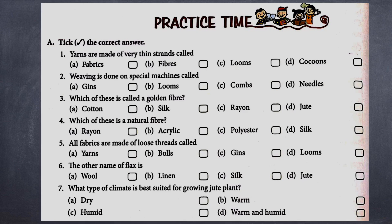The first question is pick the correct answer. First one: yarns are made of very thin strands called — A) fabric, B) fibers, C) looms, D) cocoon. Go ahead and write your answer.